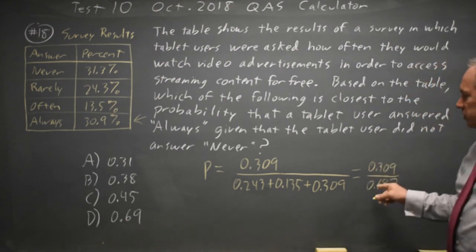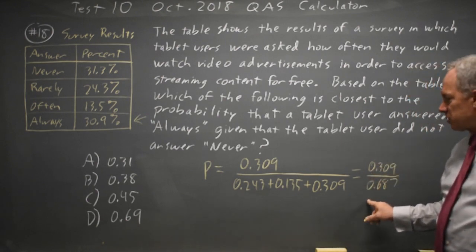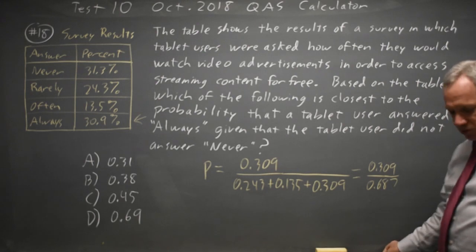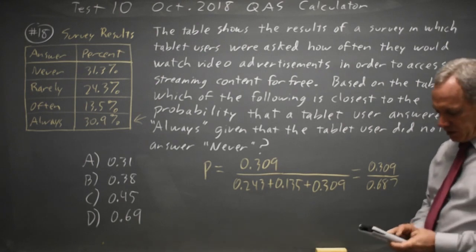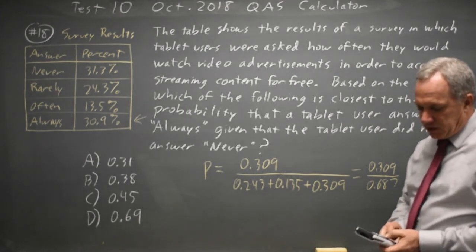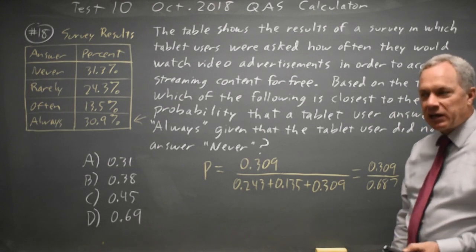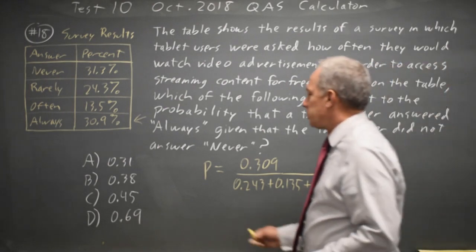Our successes over the total number of outcomes under the words of the question is the probability we're looking for, and 0.309 over that answer is 0.4498, which is 0.45.